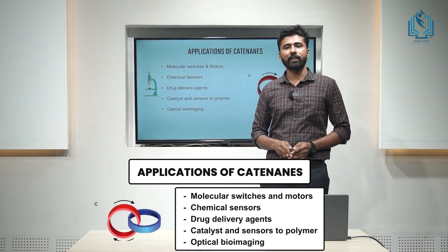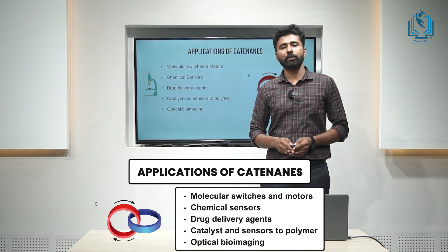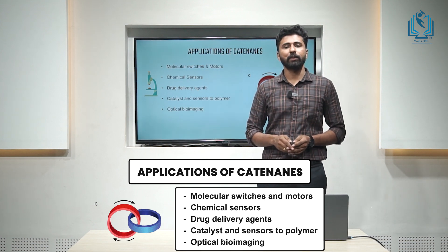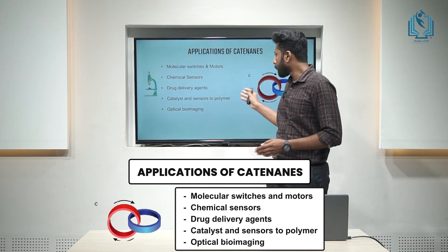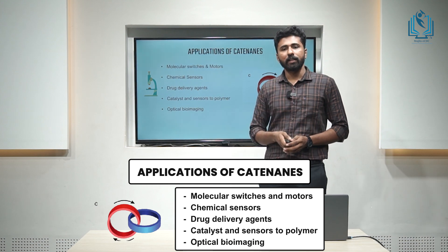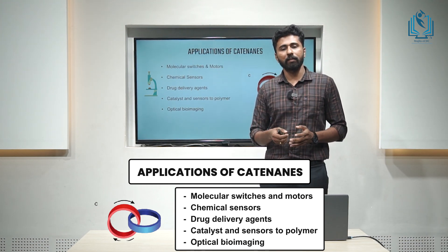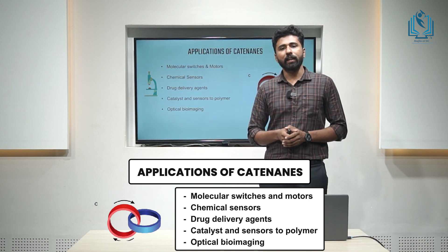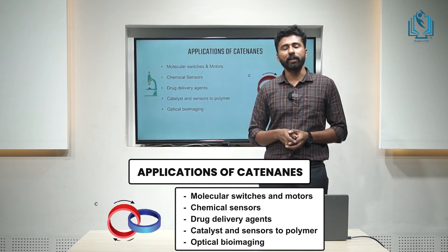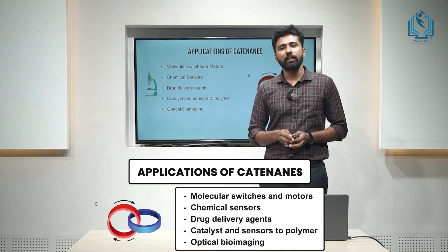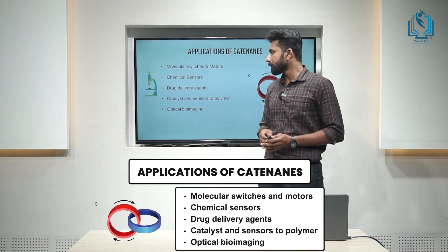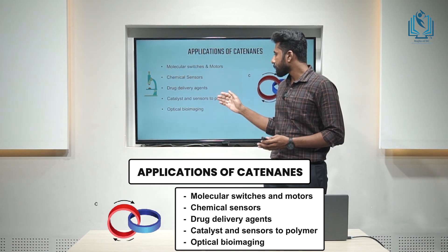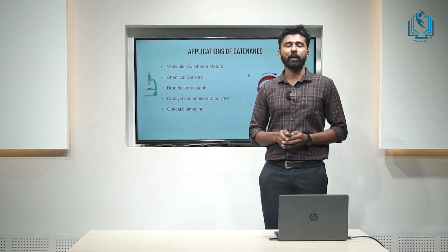Now, we have the applications of catenanes. As in the case of rotaxane, catenane can also be used as molecular switches or molecular machines. Considering 2-catenane, two macrocyclic rings are mechanically interlocked, and one macrocyclic ring can rotate with respect to the other — this movement can be used as a signal for a molecular switch. Moreover, catenanes can be used as chemical sensors, drug delivery agents, catalysts, sensors, polymers, and for optical bioimaging.